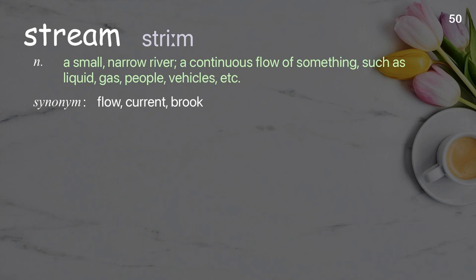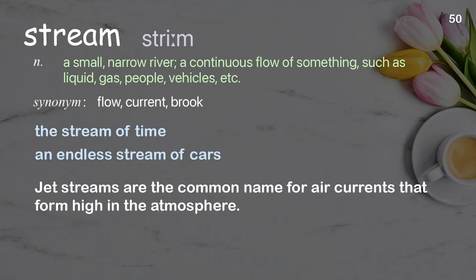Stream: A small narrow river; a continuous flow of something such as liquid, gas, people, or vehicles. Examples: the stream of time, an endless stream of cars. Jet streams are the common name for air currents that form high in the atmosphere.